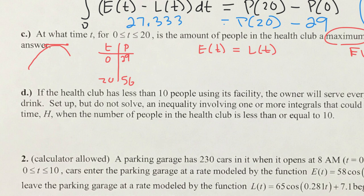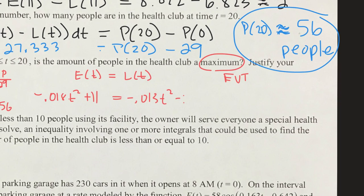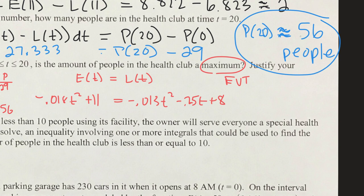Using the calculator, we set our entering equation — negative 0.018t² plus 11 — equal to our leaving equation, which is negative 0.25t plus 8. We can use the graph to find intersection, use nsolve, or do algebra. Using that method, we find t = 14.664 is where the rate equals zero.